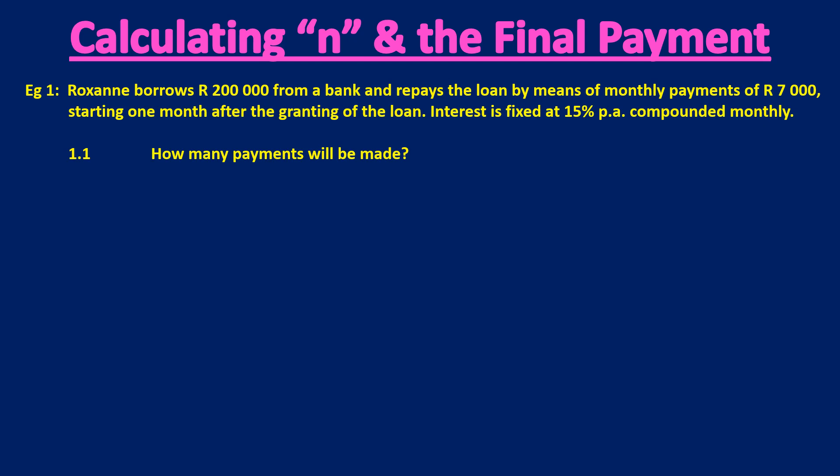In this example, Roxanne borrows 200,000 Rand from the bank and repays the loan by means of monthly payments of 7,000 Rand, starting one month after granting the loan. So first thing we realize, it's a loan that starts one month and the payments start one month after granting the loan, so it's a straightforward loan. And interest is fixed at 15% compounded monthly, and we want to know how many payments will she have to make.